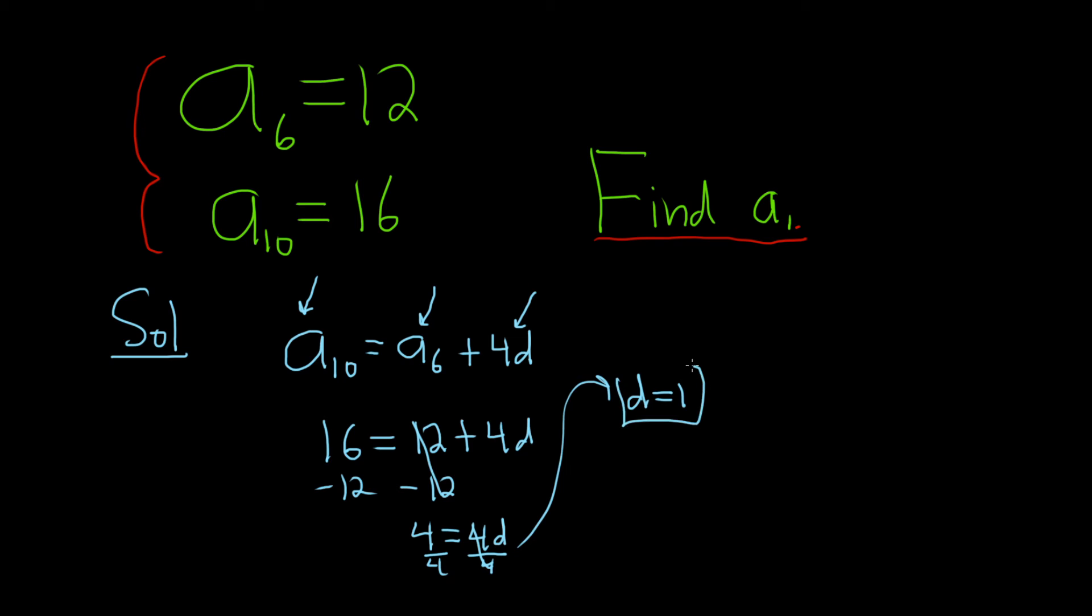d is called the common difference, it's the number that we add over and over again. So to find the first term, we just have to now create an equation using any of these terms. Let's go ahead and use this one.